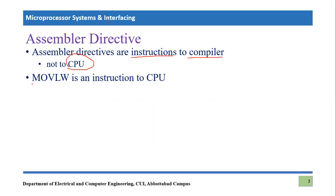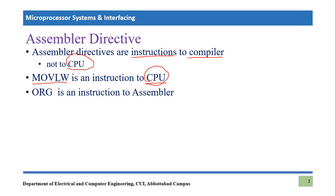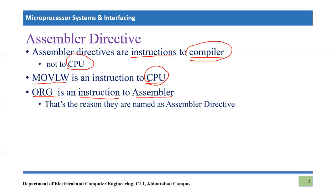For example, MOVLW — move literal to working — is an important instruction we have used multiple times. It is an instruction for the CPU: you write it in assembly language, the compiler converts it into machine code, and the CPU executes it. But assembler directives like ORG are different — this instruction goes only to the assembler or compiler, and will never be passed to the CPU. That is why they are known as assembler directives.